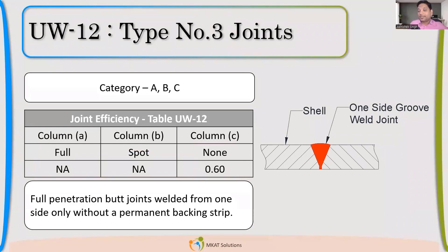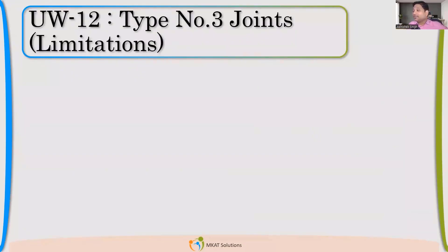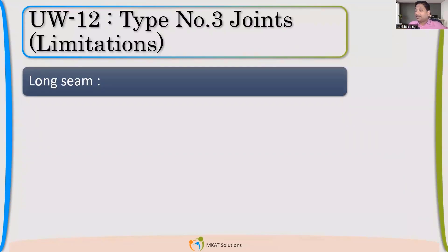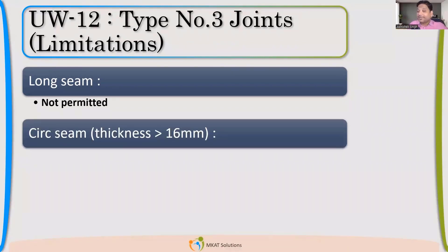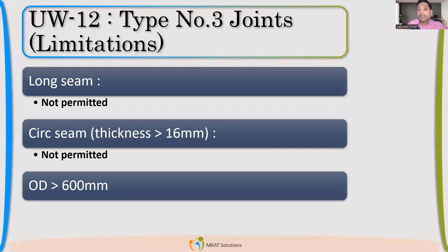Now let us look at the limitations for type number 3. Can I have this joint for all cases? For a longitudinal seam, the code says it is not permitted. I either have to use type number 1 or type number 2. For circumferential seams, if thickness is greater than 16 mm, it is not permitted. For less than 16 mm, it is permitted. Also, if the size is more than 16 inches (600 mm), it is not permitted. So there are lots of restrictions for type number 3.